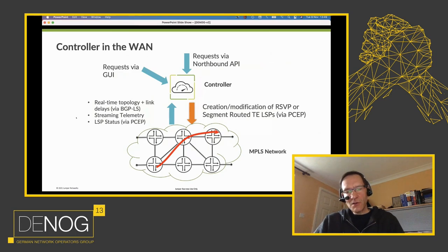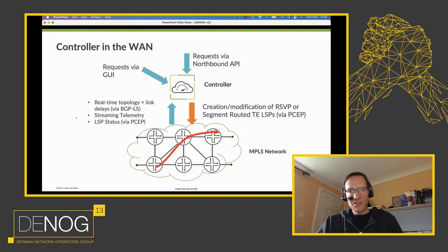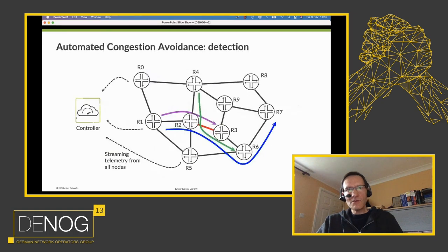On an ongoing basis the controller can tune the paths of LSPs according to observed conditions in a closed-loop manner — perhaps because the delay on a link has changed, in order to deal with congestion, or to do self-healing. It can create a maintenance window on a link or node and move LSPs away. Let's have a look in more detail at how the traffic management actually works.